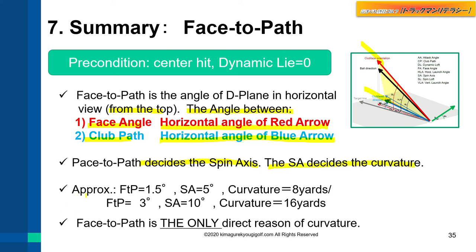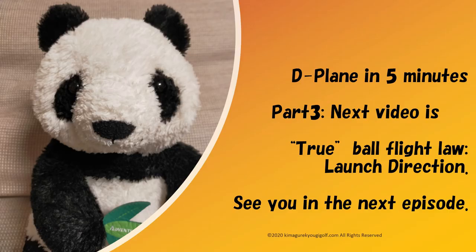Approximation of values: face-to-path of 1.5 gives a spin axis of about 5 degrees, and the ball curves about 8 yards. The most important point: face-to-path is the only direct reason for curvature. The next video is on the true ball flight law — launch direction. Thanks for watching and see you in the next episode.